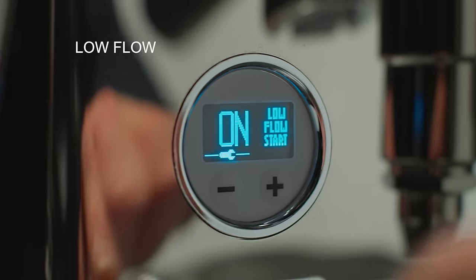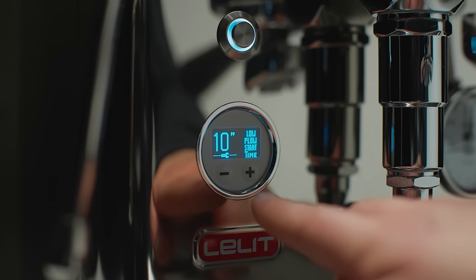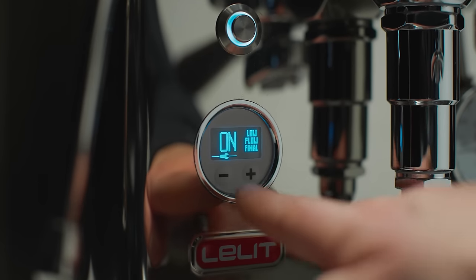The low flow mode limits the amount of water that soaks the coffee puck to allow the blend to best release its characteristics. It can be set at the beginning of the extraction, at the end of the extraction, or both.